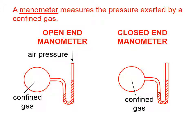On the left, since that's an open-end manometer, this top stem is open to the air, and the air pressure is exerting a downward force on the surface of this liquid. On the right, we have a closed-end manometer, in which this end is sealed, and we have a vacuum here.